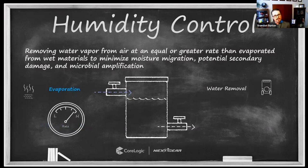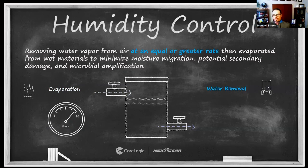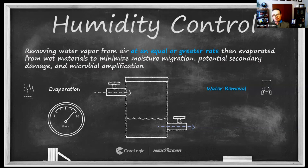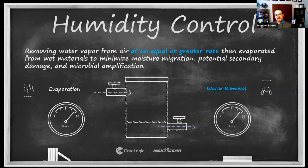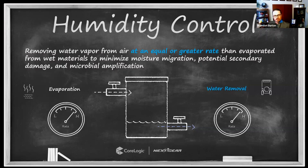Now let's move over and talk about the rate of water removal. To control the amount of moisture in this bucket and move it in the right direction, a downward or stable humidity level indicates that we are in control. If humidity is increasing over time, we are not in control. Per the S-500, it is standard of care that we must establish humidity control, and your documentation should show that you've established it.